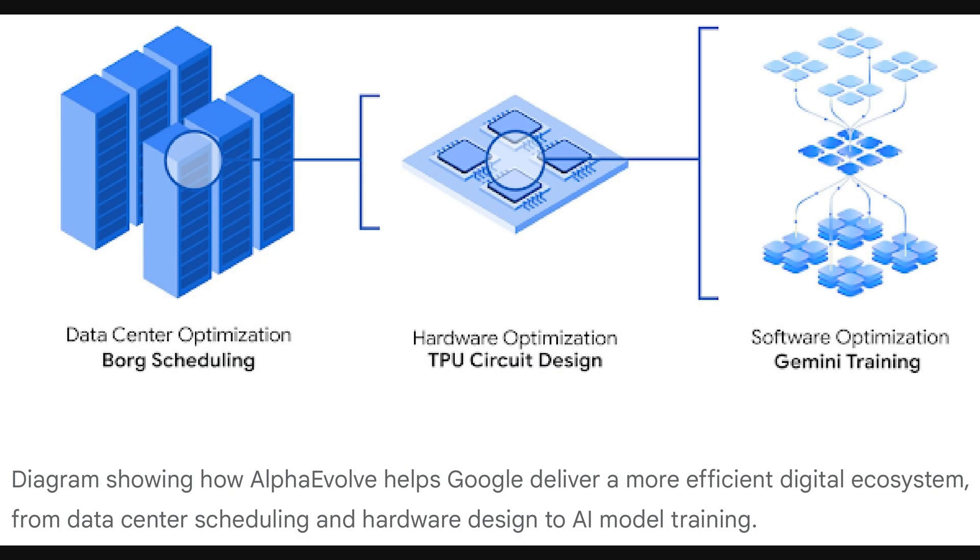Okay, building on that evolutionary process, this next diagram illustrates some of the practical applications where AlphaEvolve is making a difference. It shows three key areas. First, data center optimization, specifically for Borg scheduling. Borg is Google's internal system for managing their massive data centers, so optimizing its scheduling is a big deal.